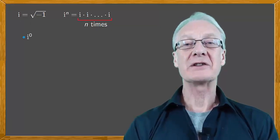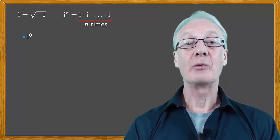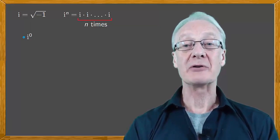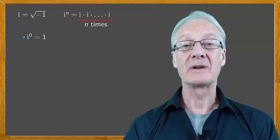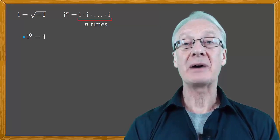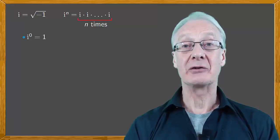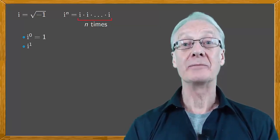Let's start with i raised to the power of zero. Well, whenever we have an exponent of zero, the result is one. We also know that anything to the power of one is itself, so i raised to the one is i.